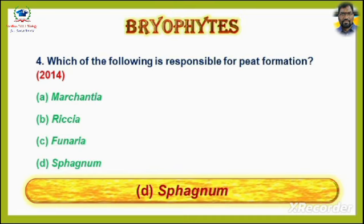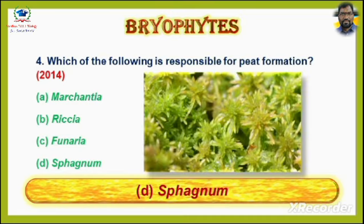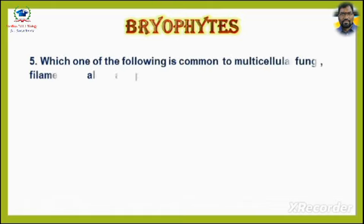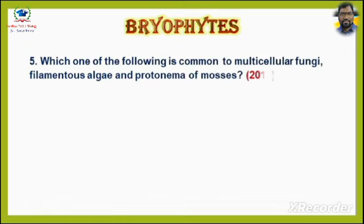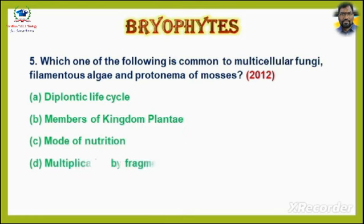Answer is Option D: Sphagnum. Question No. 5. Which one of the following is common to multicellular fungi, filamentous algae, and protonema of mosses? Asked in 2012. Options are: A. Diplontic life cycle. B. Members of Kingdom Plantae. C. Mode of nutrition. D. Multiplication by fragmentation.